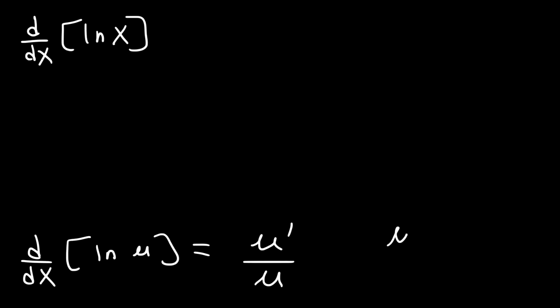So in this example, u is x, and the derivative of x is 1. Therefore, the derivative of the natural log of x is going to be 1 over x.